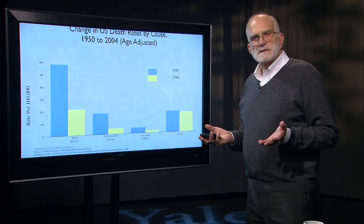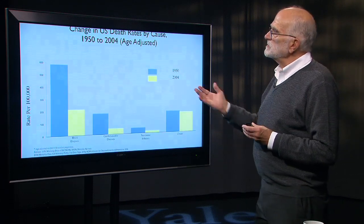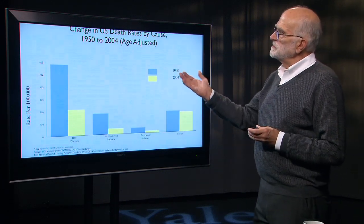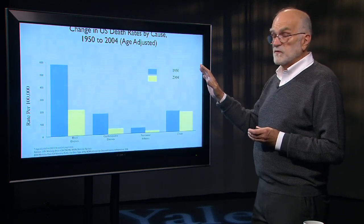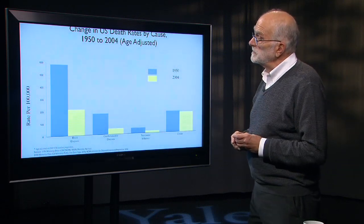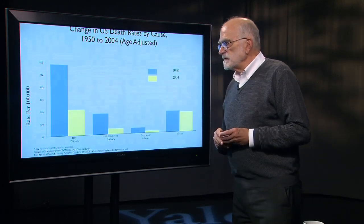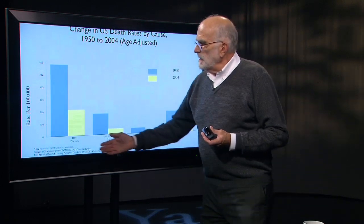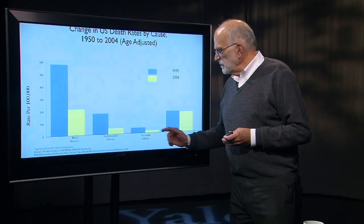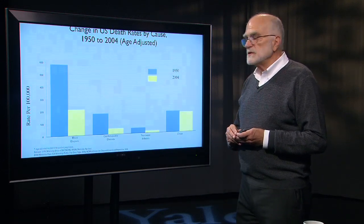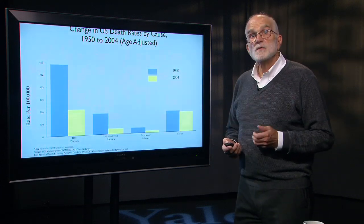If we ask how well we are doing at improving our ability to deal with cancer, look at the contrast between death rates in the United States in 1950 and 2004, adjusted for age. We see much lower death rates for heart disease, stroke, and pneumonia and influenza — but no change in the death rate for cancer. So we are not doing much better.